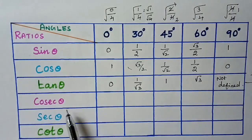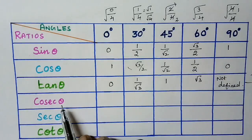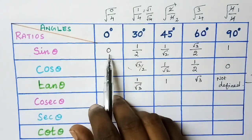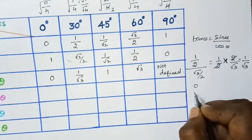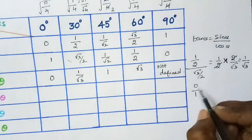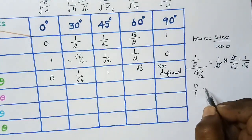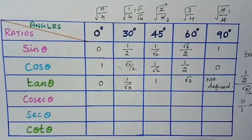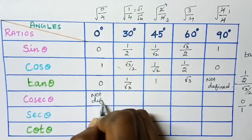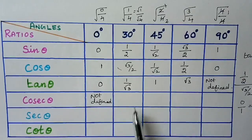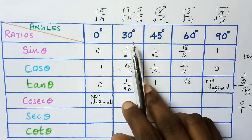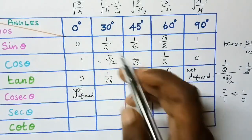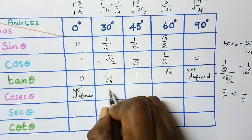Next we are going to find out cosecant theta. Cosecant theta is the reciprocal of sin theta. Here sin 0 degree is 0, so that means 0 by 1, and the reciprocal is 1 by 0 which is not defined. For sin 30 degree, the reciprocal of 1 by 2 is 2 by 1 which is 2.